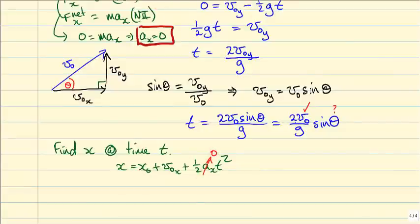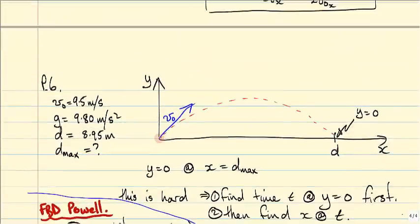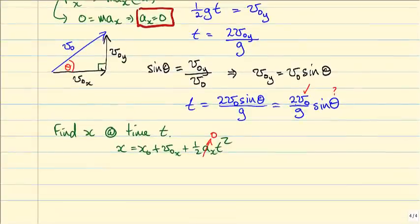So x0, well, in our problem, we're going to pick x0 to be 0 so that when we do our problem, we start at 0 and end up at x equals d. So this is 0. x is going to be the d that we're looking for. So this is going to be d.